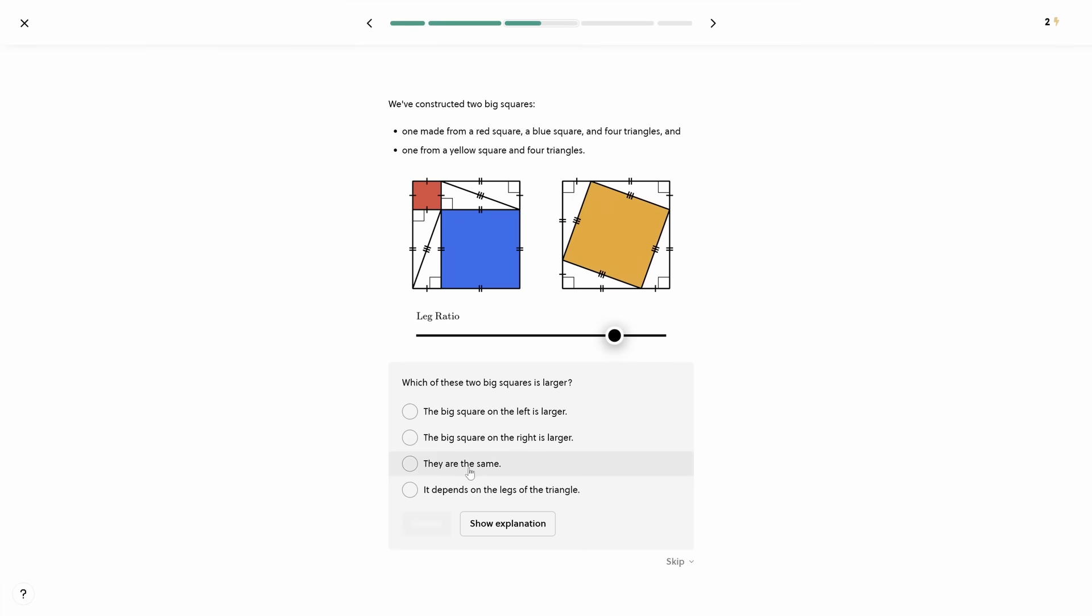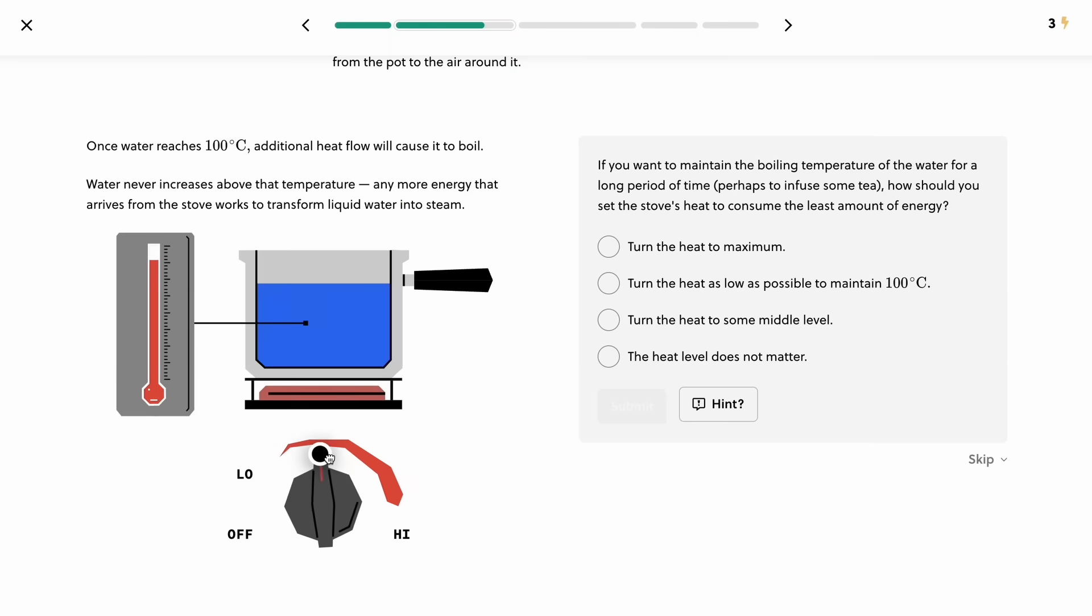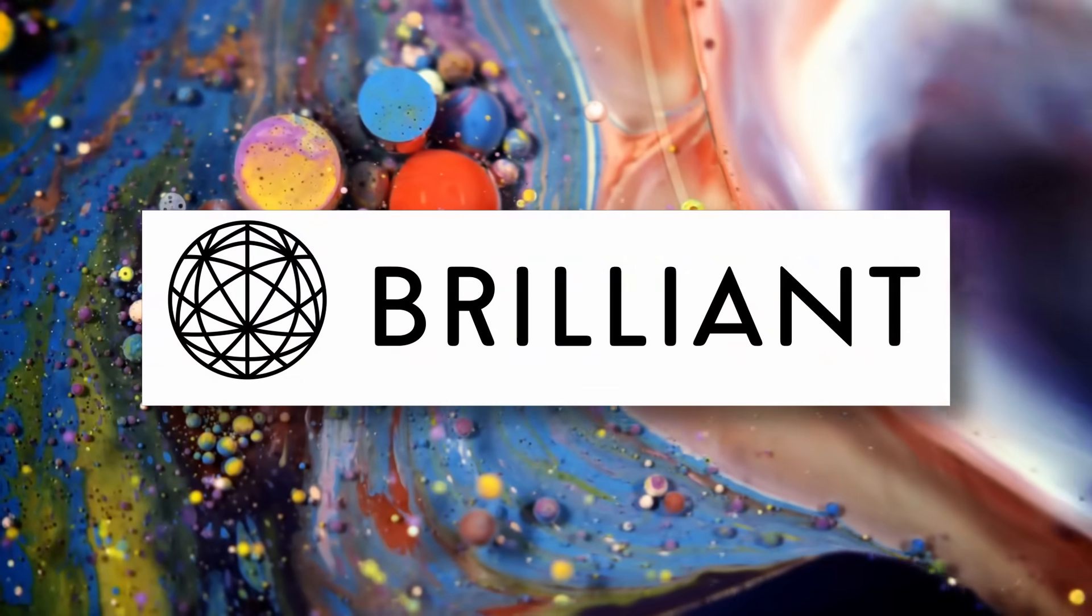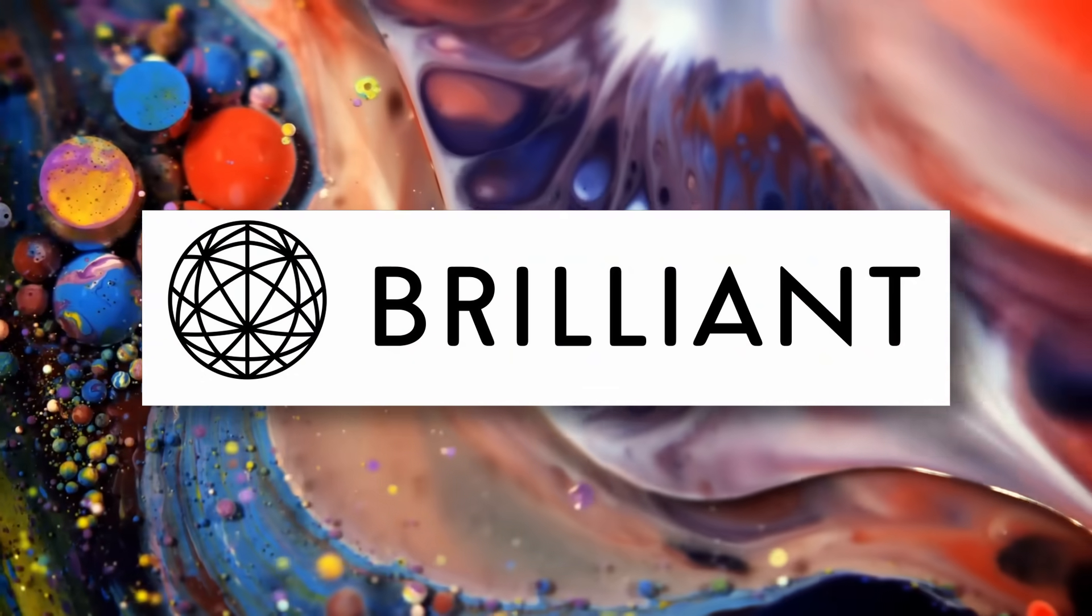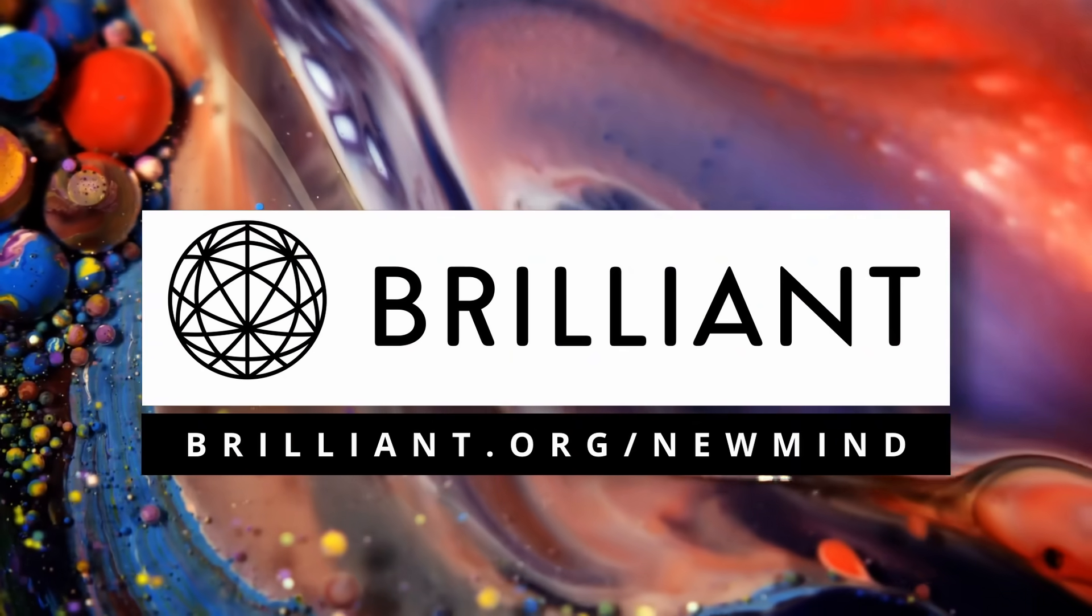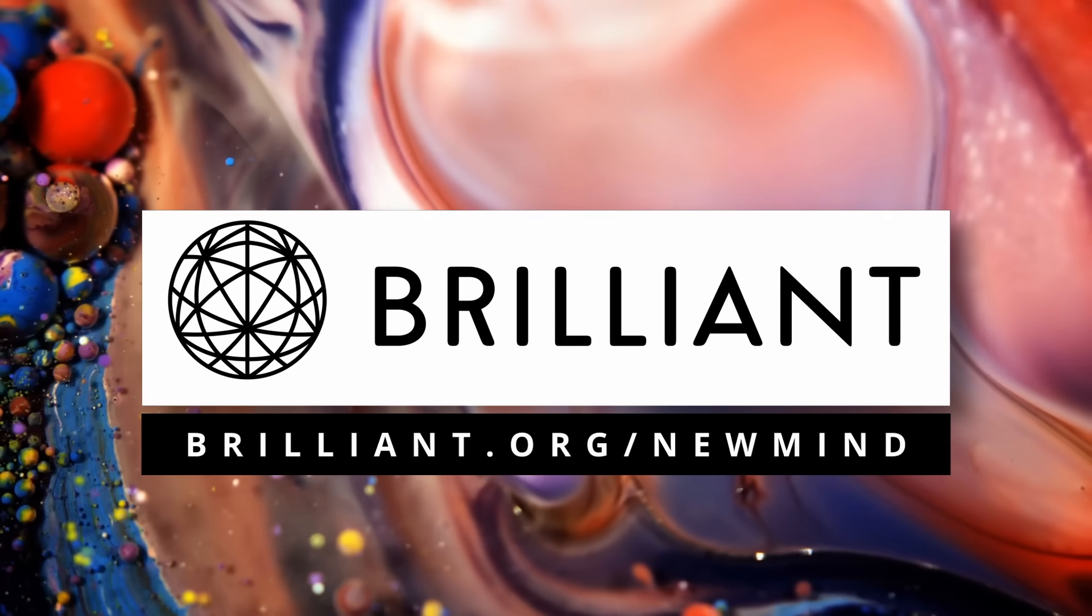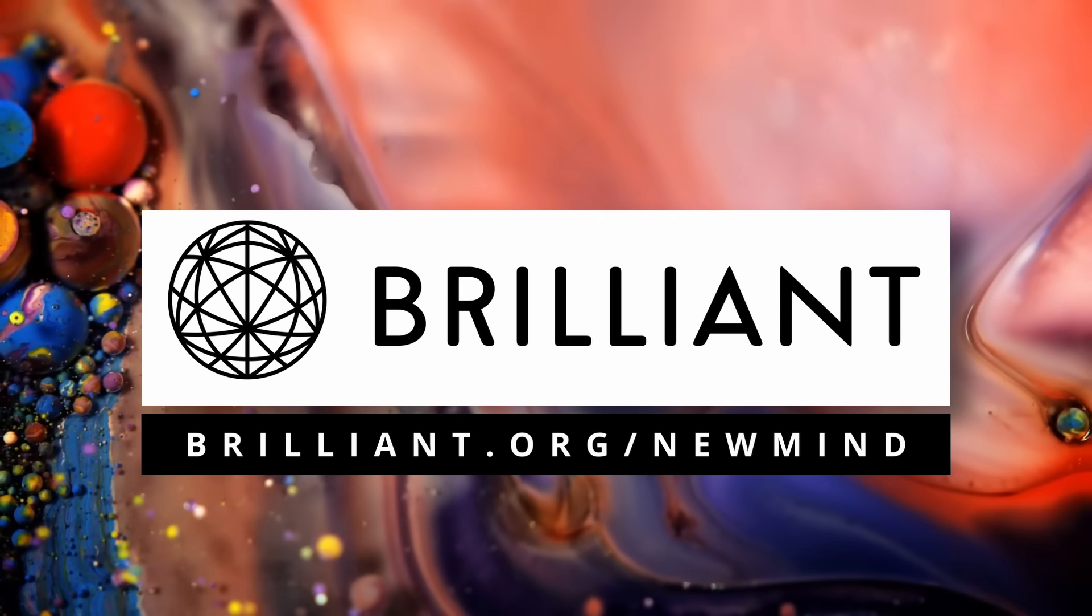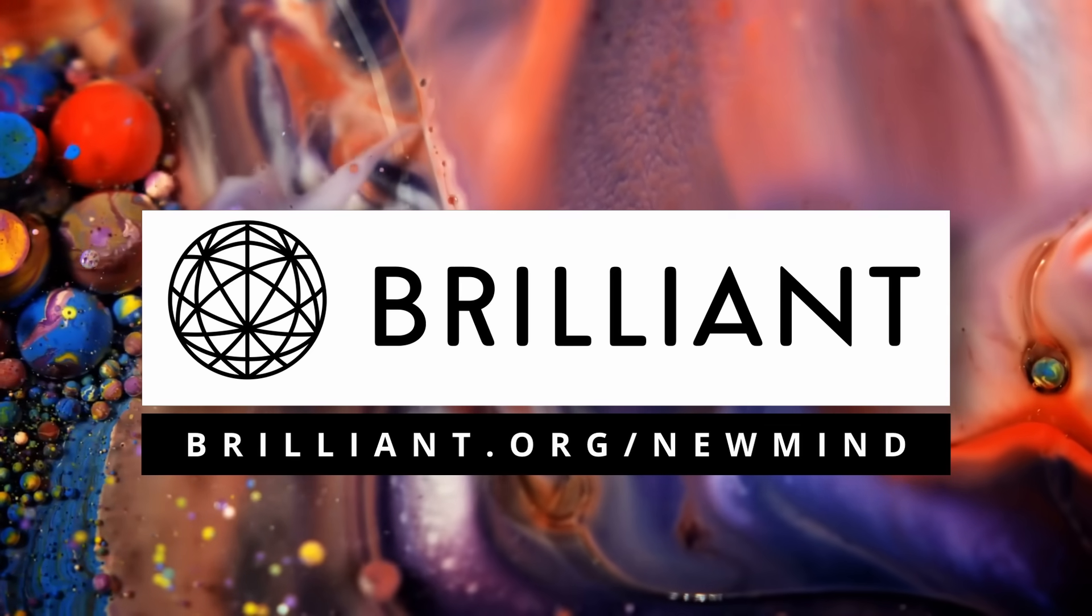With Brilliant, you learn in depth and at your own pace. It's not about memorizing or regurgitating facts. You simply pick a course you're interested in and get started. If you feel stuck or made a mistake, an explanation is always available to help you through the learning process. If you'd like to try out Brilliant and start learning STEM for free, click the link in the description below or visit brilliant.org/newmind and the first 200 of you will get 20% off an annual premium subscription.